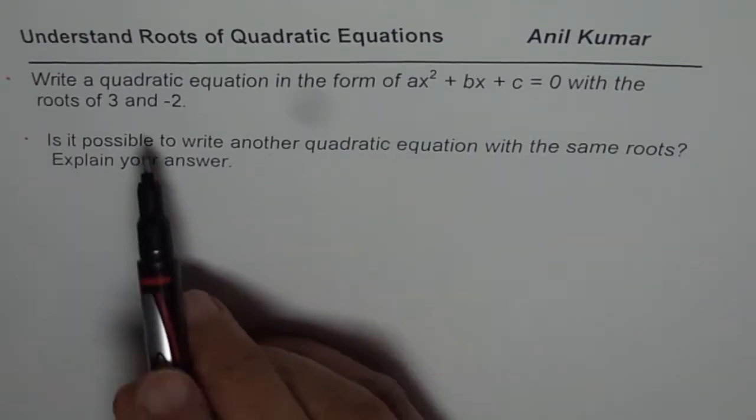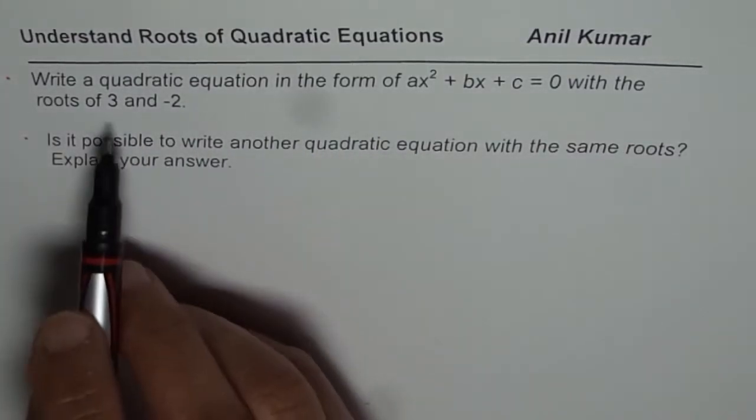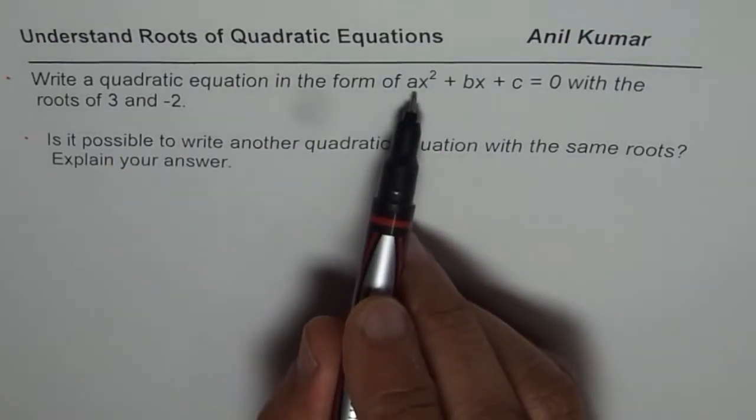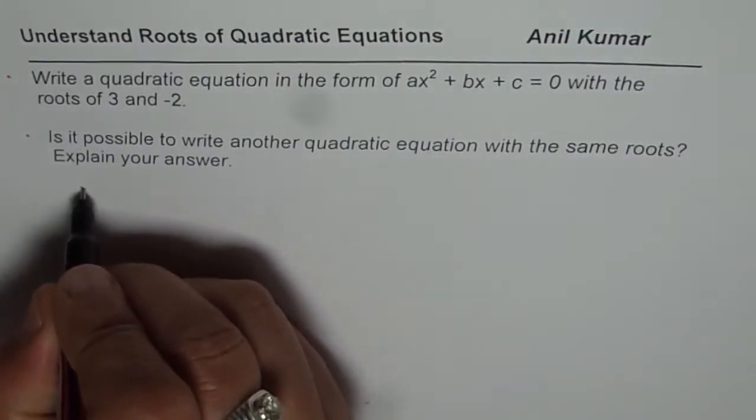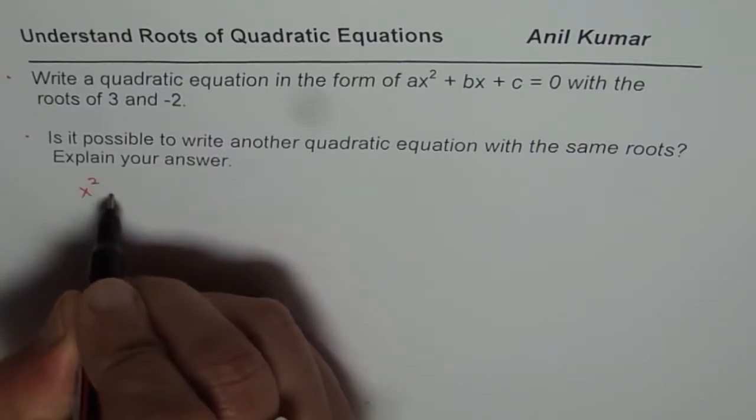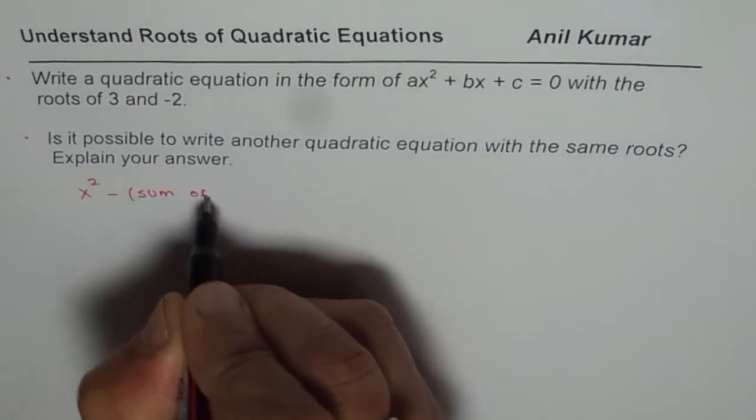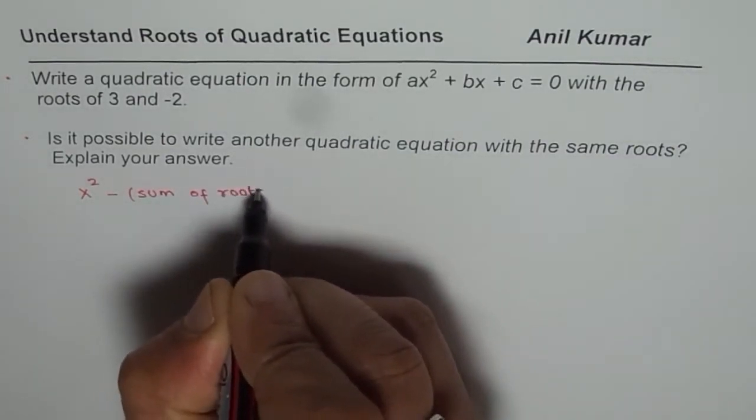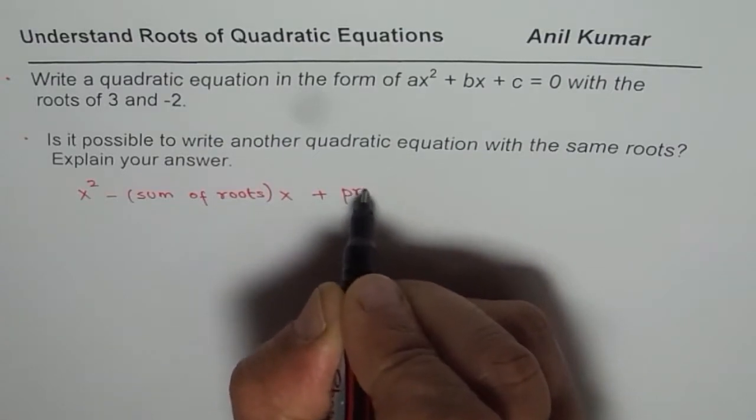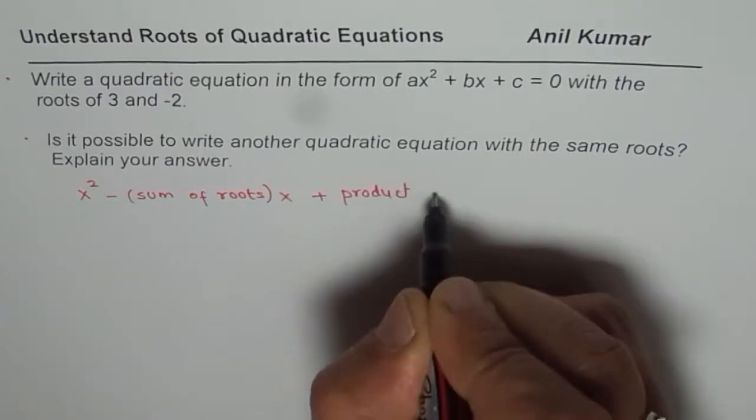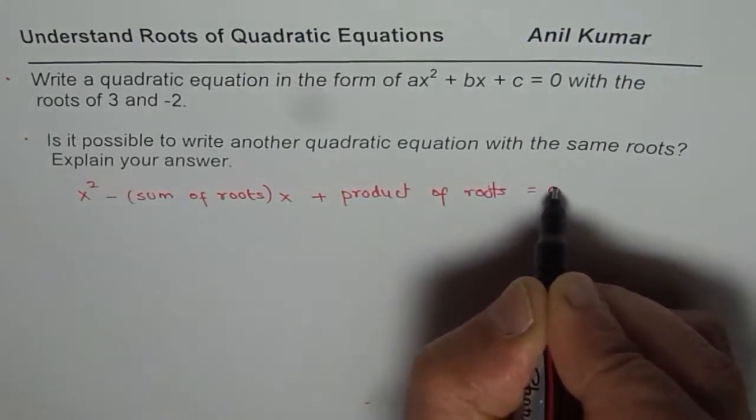Now what we have learned here is that if we are given the roots in general, if we are given roots at p and q, then I could write quadratic equation in this form where I could write this as x² minus sum of roots times x plus product of roots equals to 0.